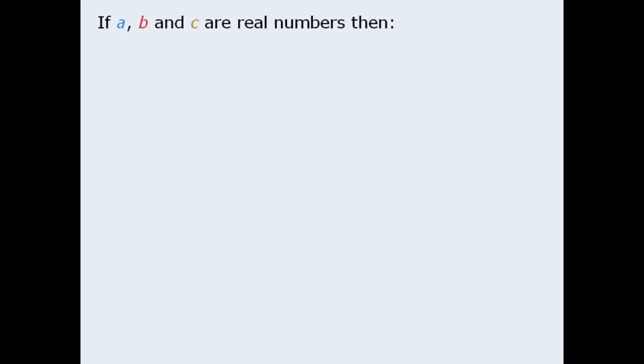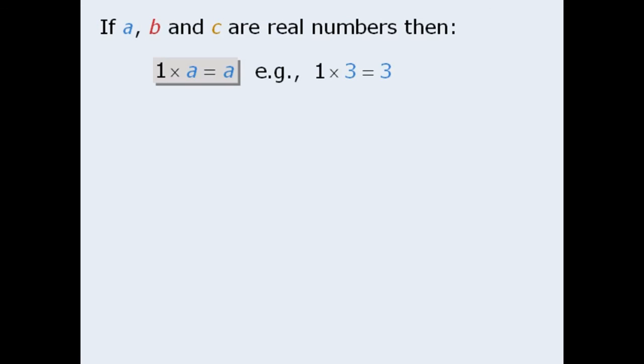The last set of properties concern the numbers 1 and 0. First, when we multiply any number by 1, the product is always that number. Second, when we divide any number by 1, the quotient is always that number.